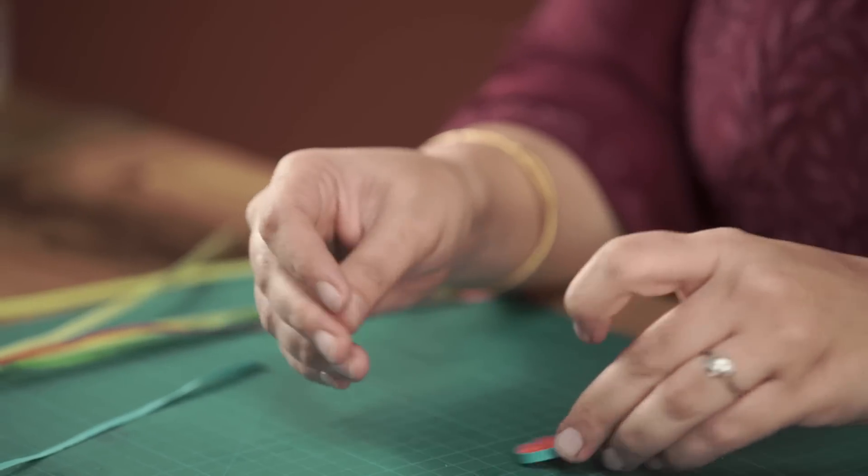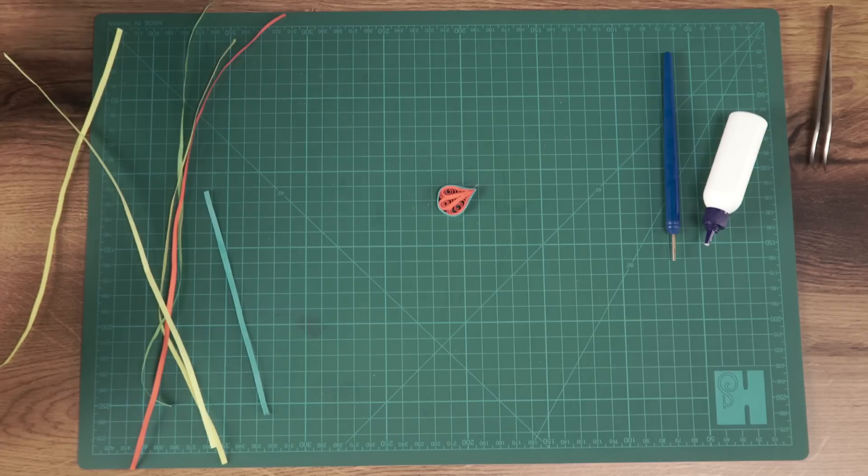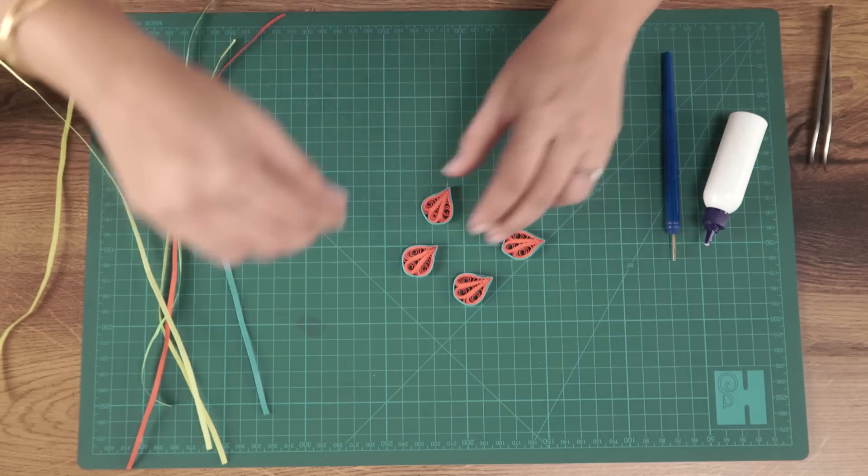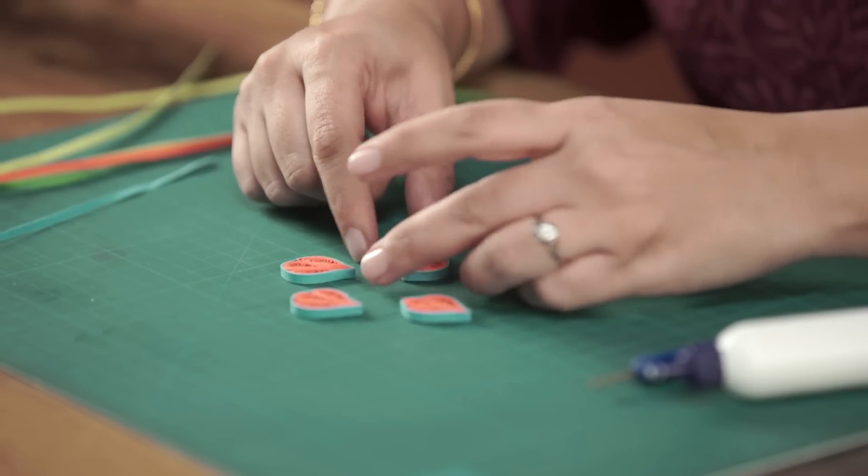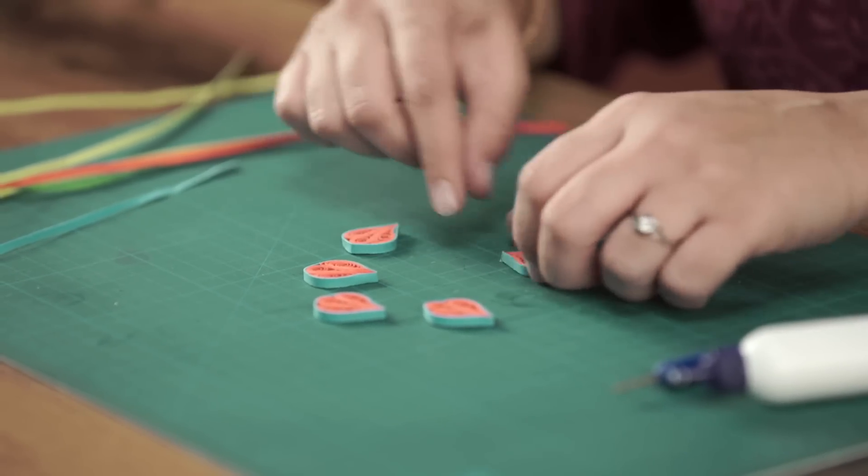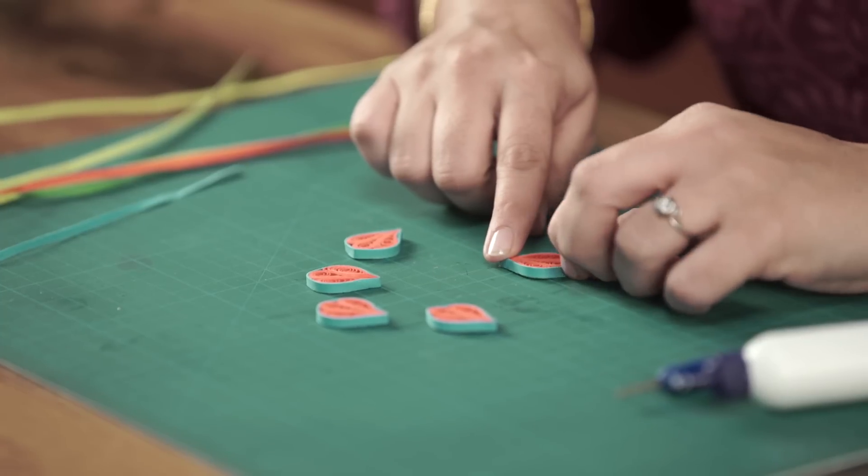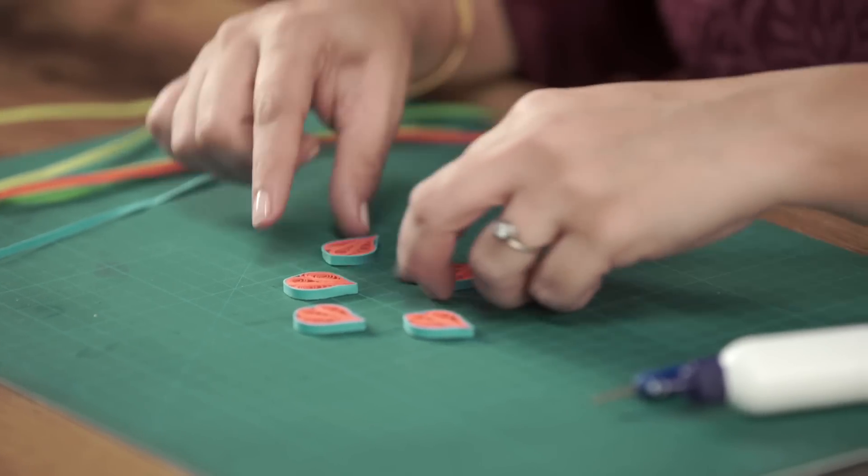Let's glue it together properly. I've made four such petals ready and we're going to put them all together. What I've done is I've just pressed it up a bit, giving it a pointy edge.